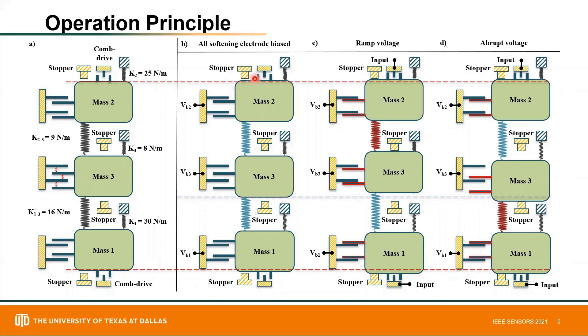When a similar input signal is applied to the comb-drive actuators, mass two pulls in first. Depending on the voltage of the input signal, mass three moves upward or downward. Let's consider the case of the ramping or gradually increasing input voltage.